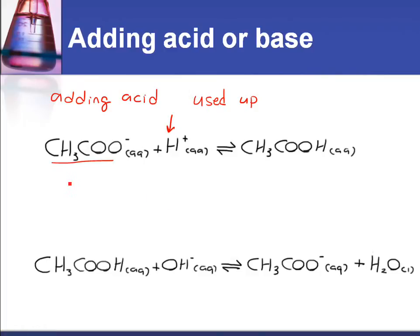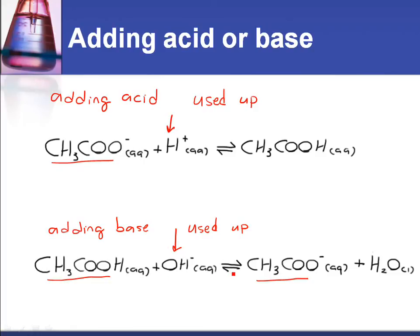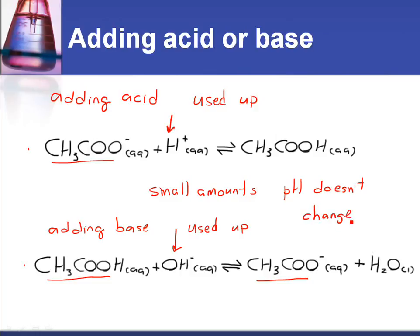Now what if we add base? The base is OH⁻, so the OH⁻ reacts with the ethanoic acid and it gives you the products — the ethanoate ion and water. So again, if you add small amounts of base, the OH⁻ is used up in this reaction. So basically, by adding H⁺ or OH⁻ — remember it's small amounts — in these two reactions the H⁺ and OH⁻ are used up, so therefore the pH doesn't change. And that's basically the action of a buffer solution.